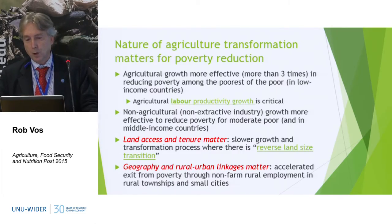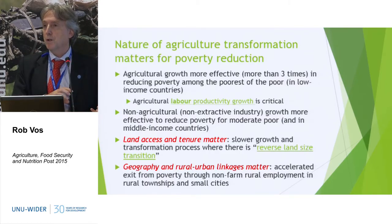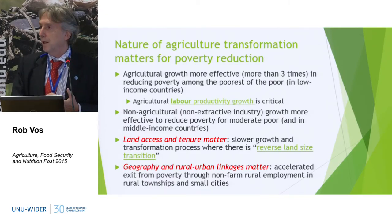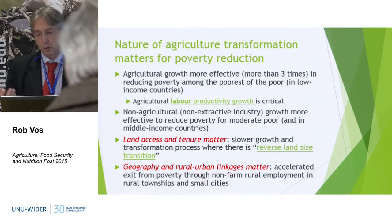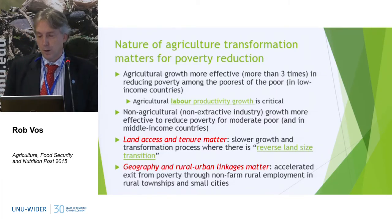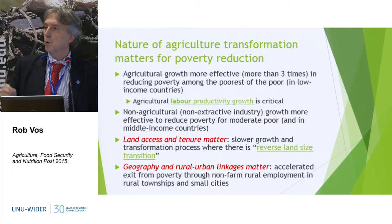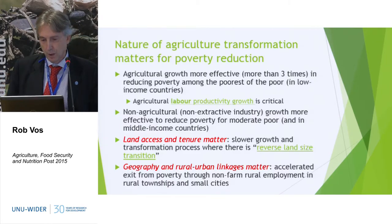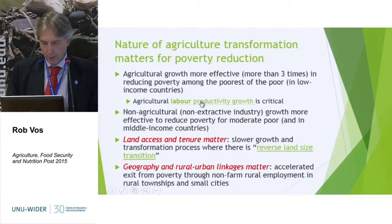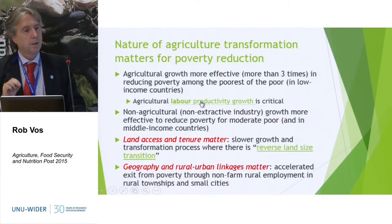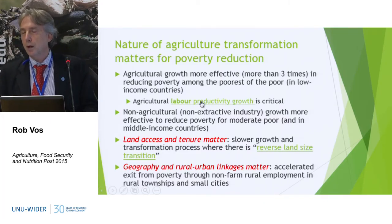Coming back to the agricultural transformation, this matters for poverty reduction. As noted in the beginning, it's kind of obvious that if most of the poor live in rural areas and also depend on agriculture, then agricultural development is likely to have a big impact on poverty, and that's what we find in practice. Agricultural growth is often more than three times more effective at reducing poverty than growth in other sectors. That seems to apply most when we get to the poorest of the poor. For the more moderate poor, non-agricultural income growth becomes more important.